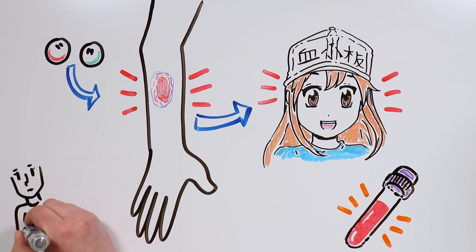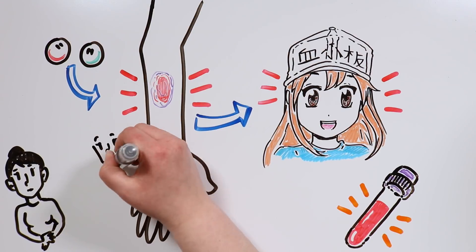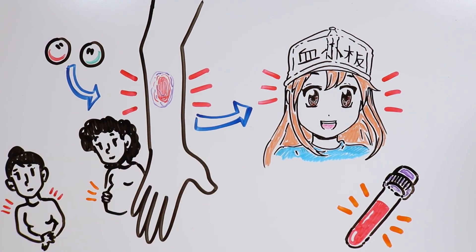Moreover, hormones can also make bruises easier to form. This can happen when women have premenstrual syndrome, or are pregnant.